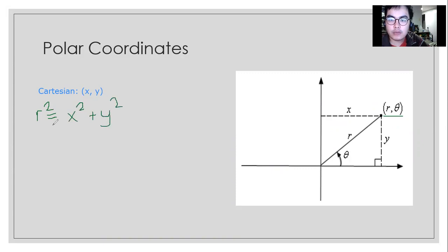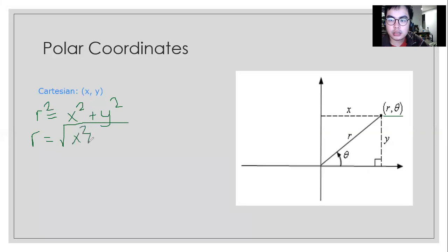So now we have R squared equals X squared plus Y squared. In order to find R, we're going to apply the square root on both sides. So this is R.